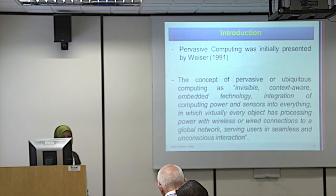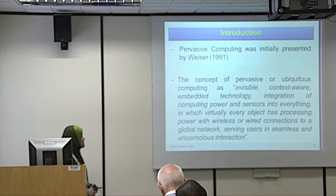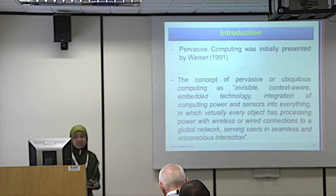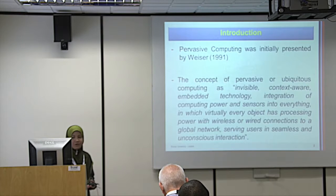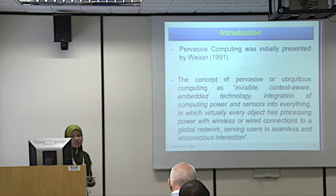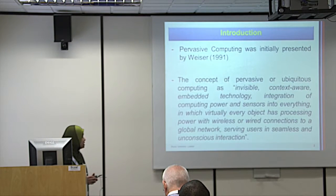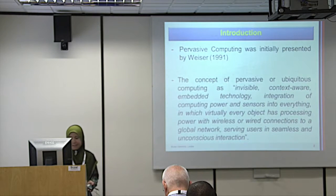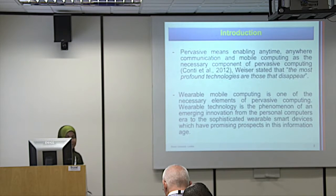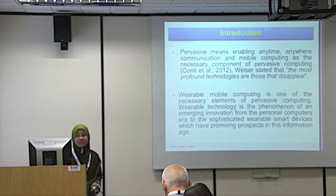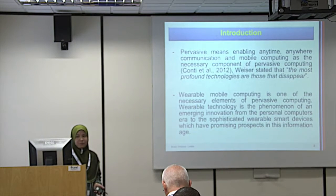What is pervasive? Initially presented by Weiser, the concept of pervasive — or ubiquitous — involves invisible, context-aware, embedded technology: the integration of computing power and sensors into everything, where virtually every object has processing power with wireless or wired connection to a global network, serving users in seamless and unconscious interaction. Pervasive means enabling anytime, anywhere communication, and mobile computing is the necessary component of pervasive computing.